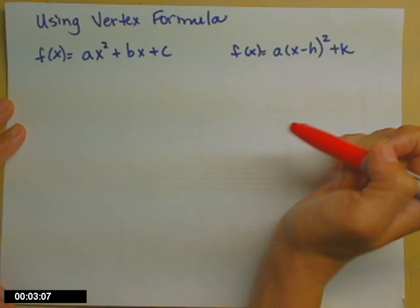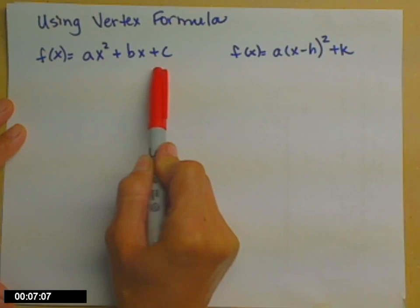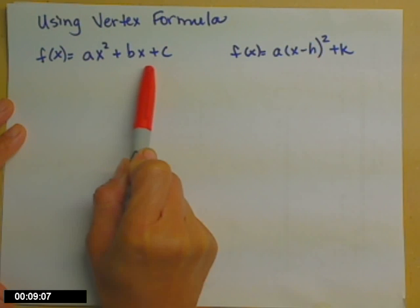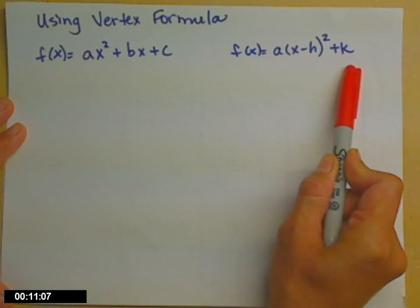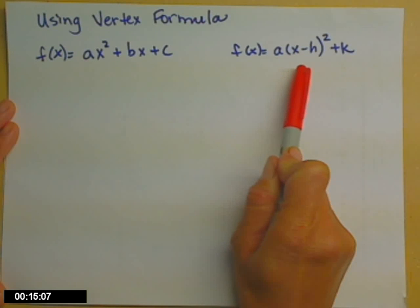So here we have our two versions of a quadratic function. The general form where it's all multiplied out, ax squared plus bx plus c, and then the standard form where we can read off the vertex. We get to here by completing the square. At least that's how we've done it up till now.